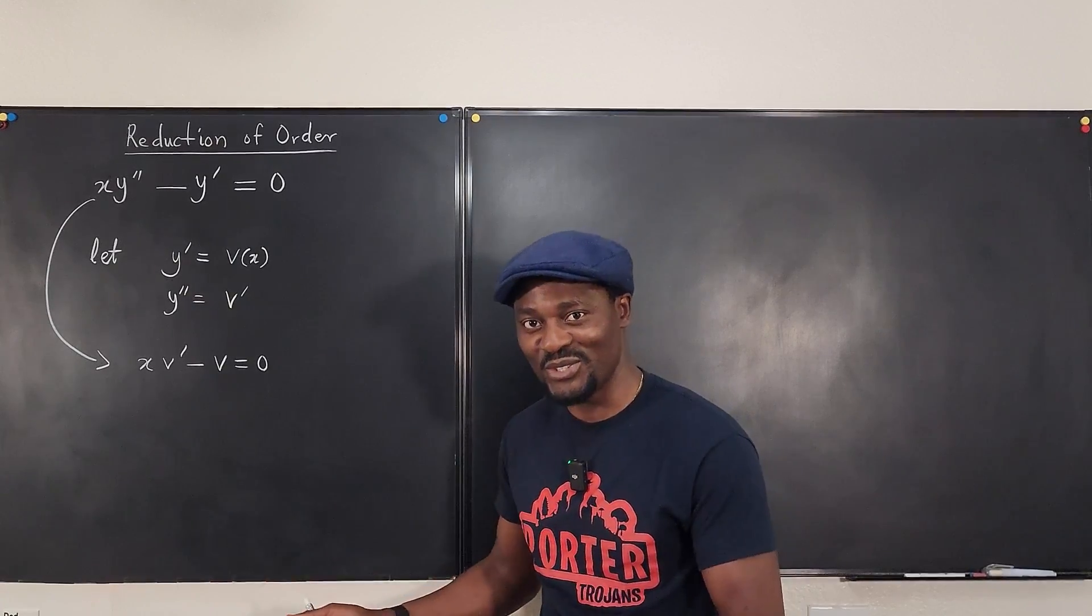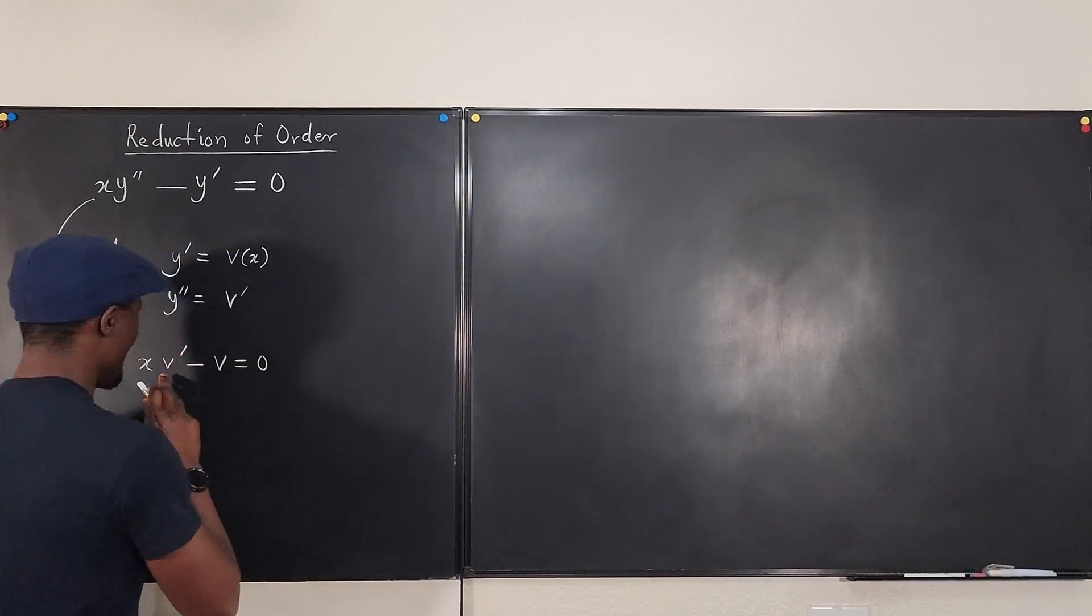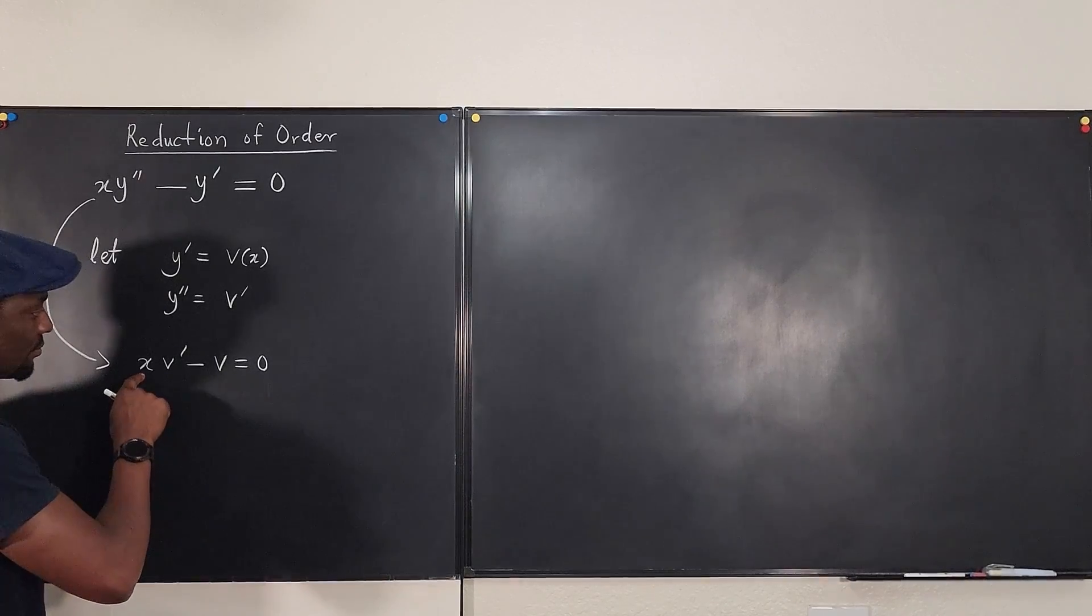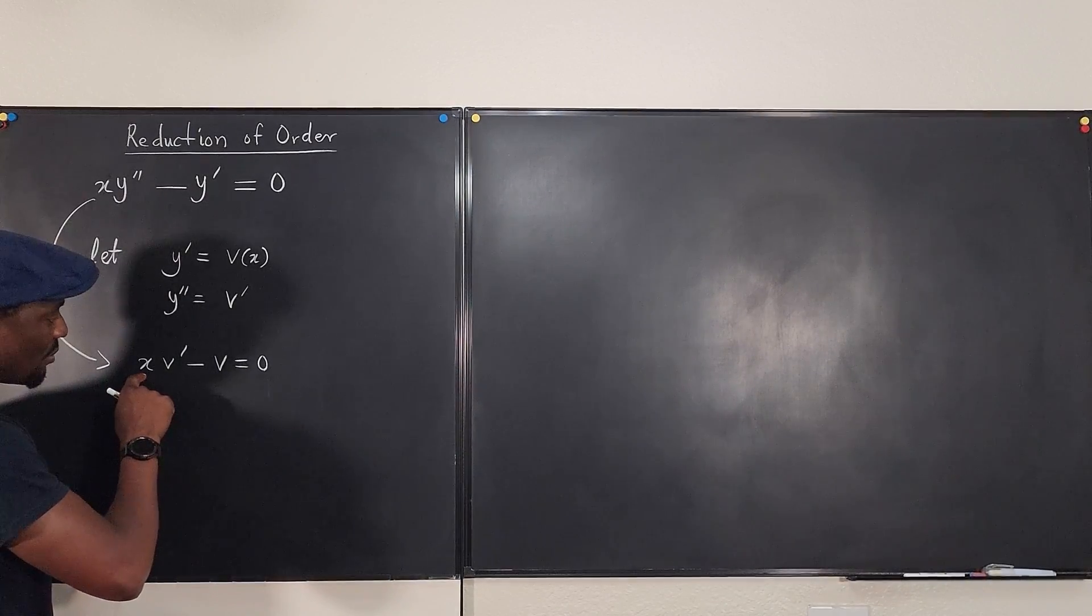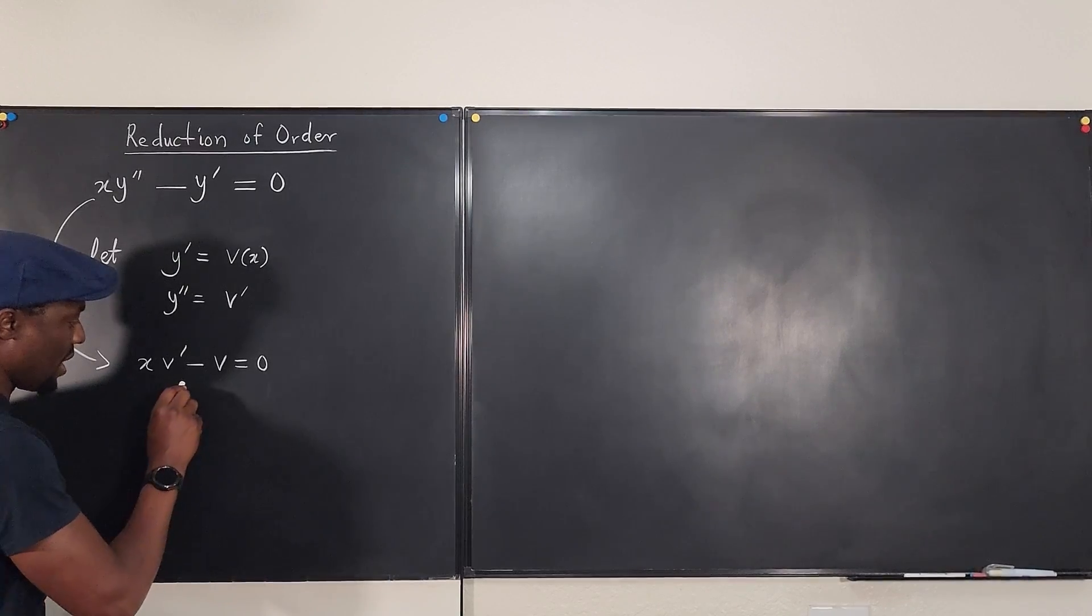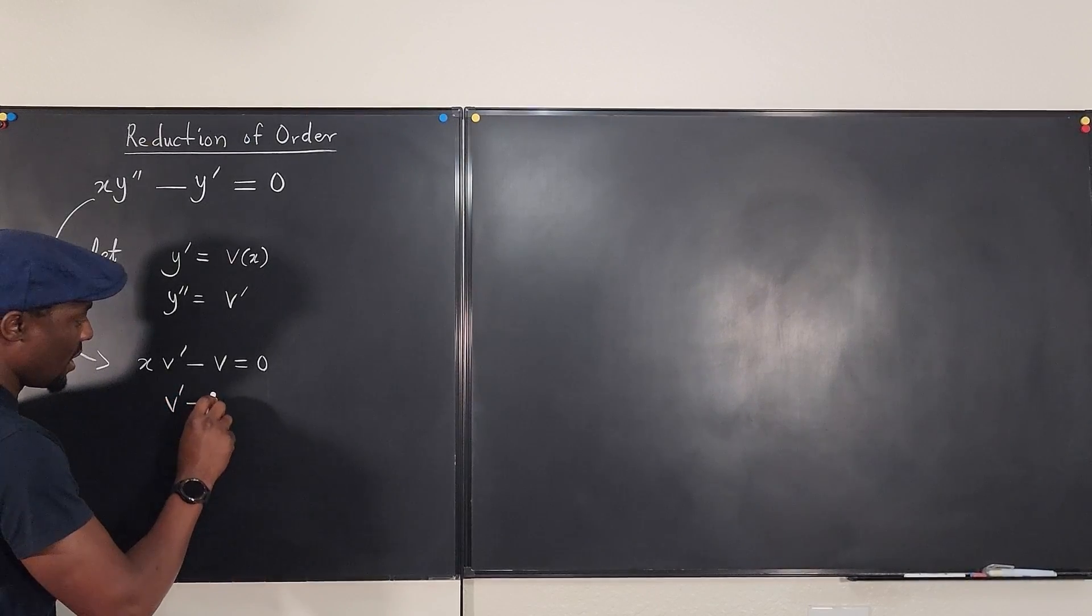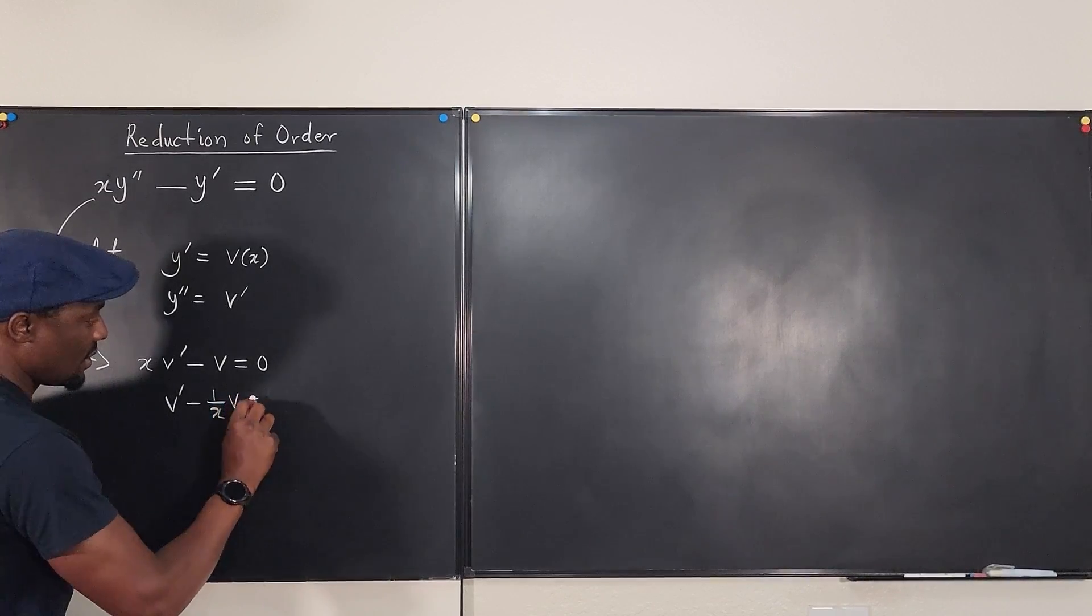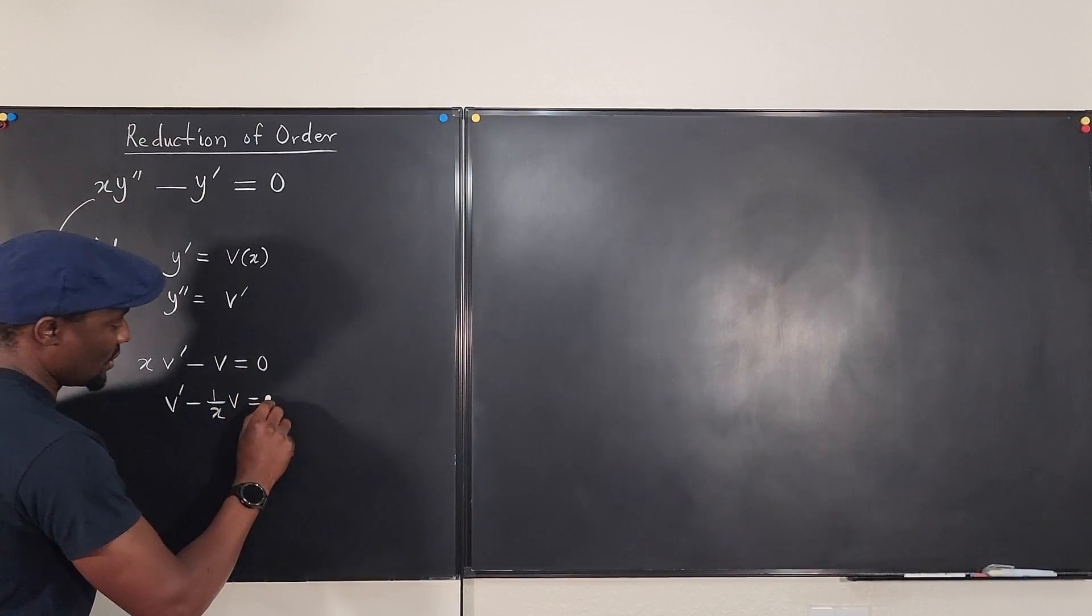Clearly, it's a linear separable differential equation. And I'm going to write this in another way. Firstly, I'm going to divide everything by x so that what I have here will be v prime minus 1 over x v is equal to zero divided by x, which is zero.